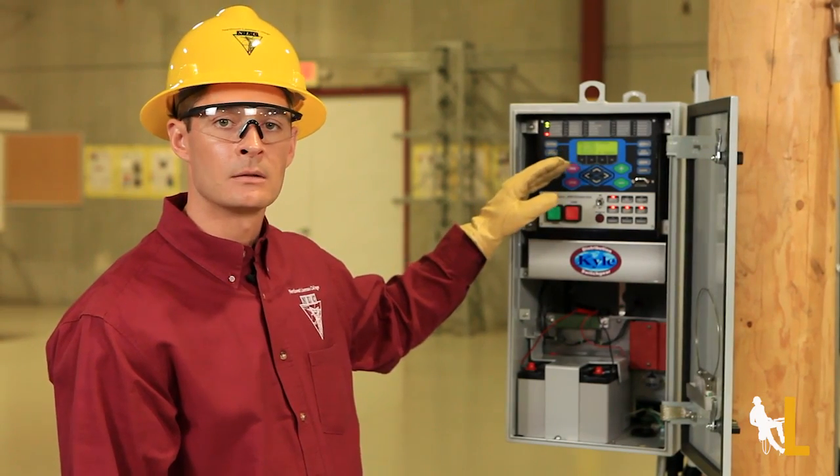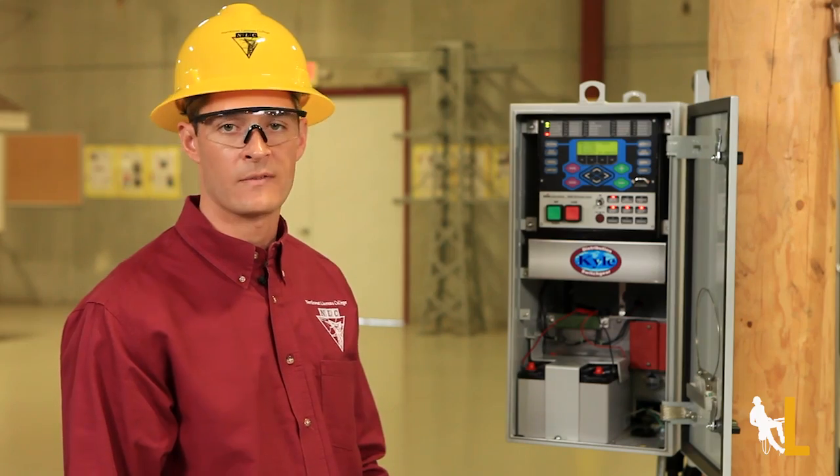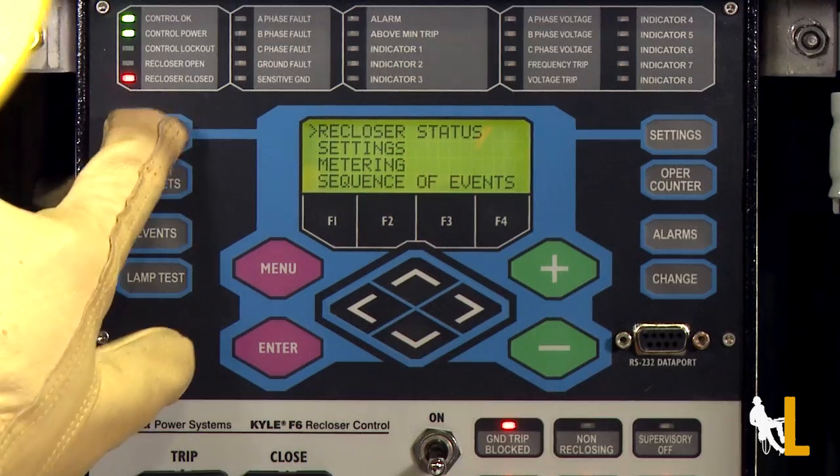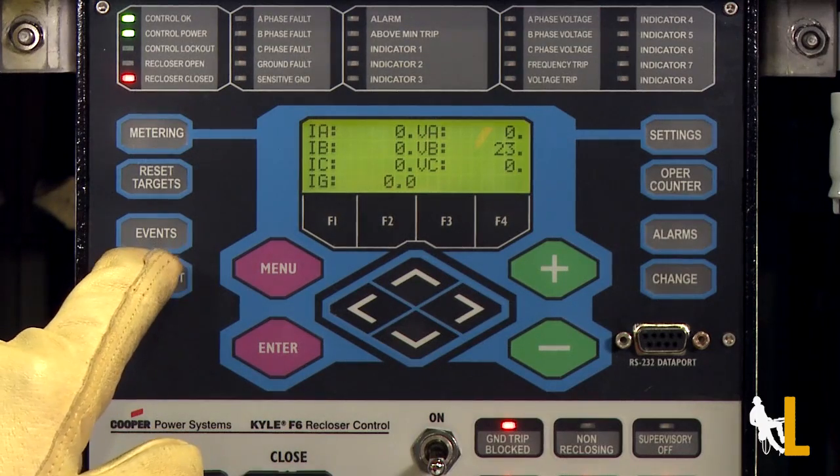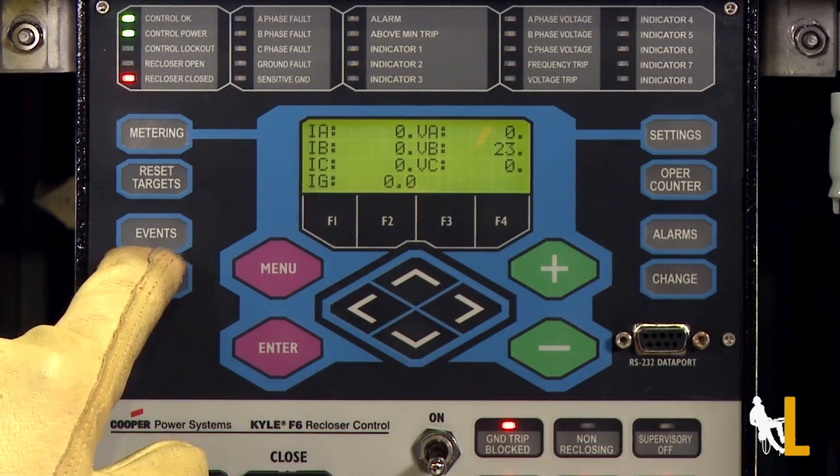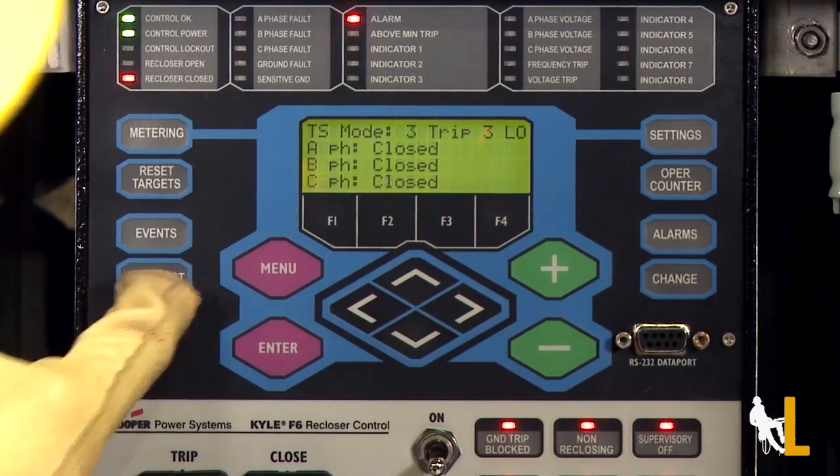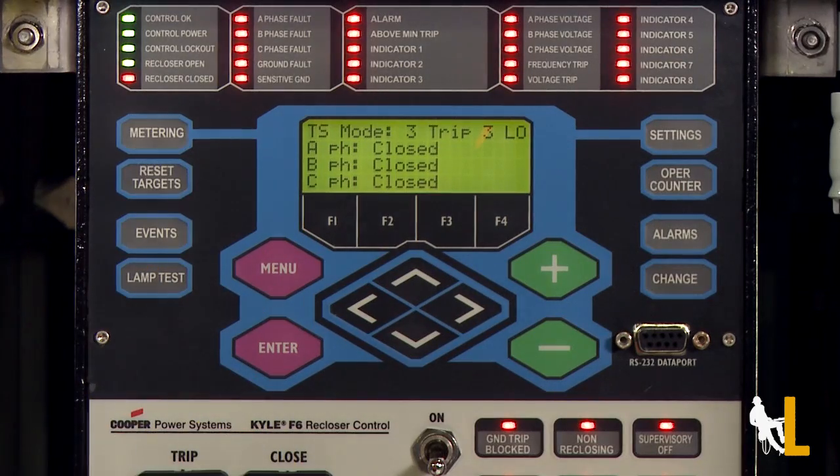The top buttons on the panel are for programming and finding specific information. Metering will display instantaneous current and voltage on the line. Reset targets will reset the fault target indicators. Events will show a log of the last 25 actions. Lamp tests will illuminate all the lamps to make sure they are working properly.